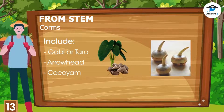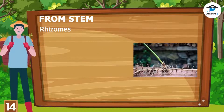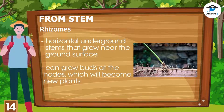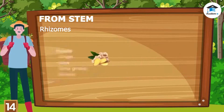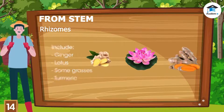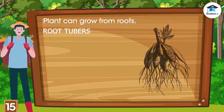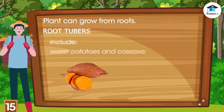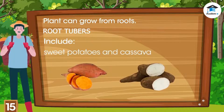Rhizomes are horizontal underground stems that grow near the ground surface; they can grow buds at the nodes which will become new plants. Examples include ginger, lotus, grasses, and turmeric. Root tubers are singular enlarged or swollen roots that function as storage organs for water and nutrients. Sweet potatoes and cassava are examples of root tubers.